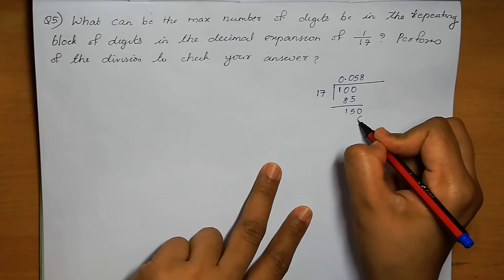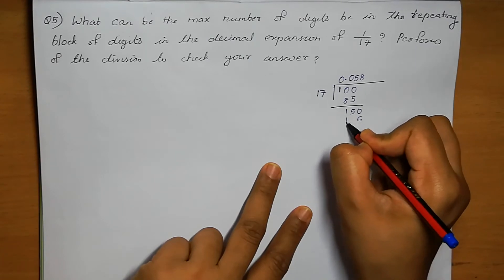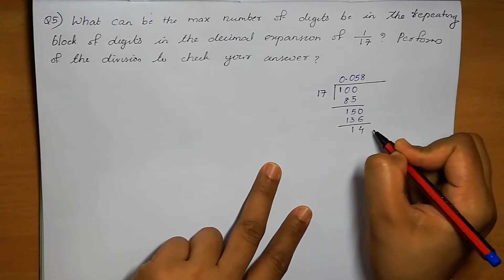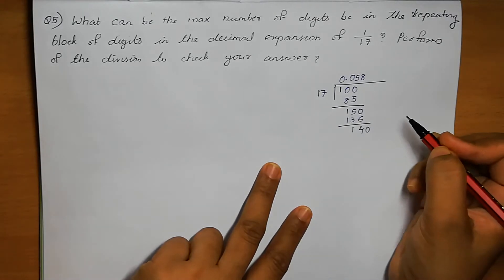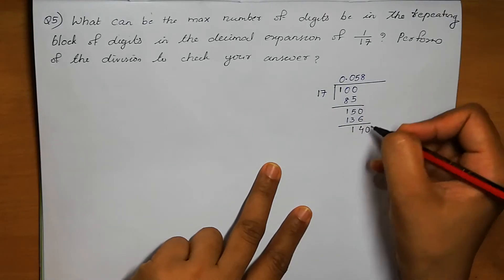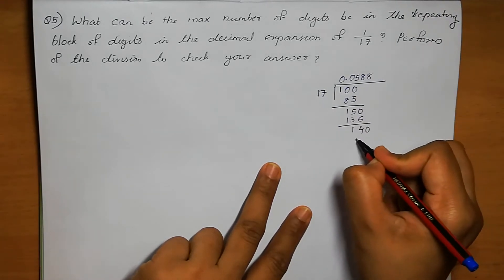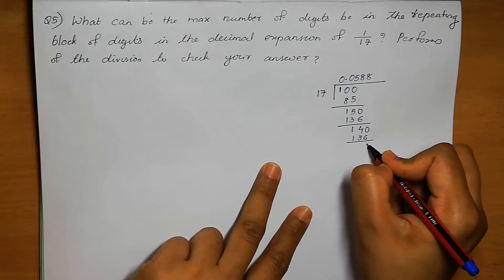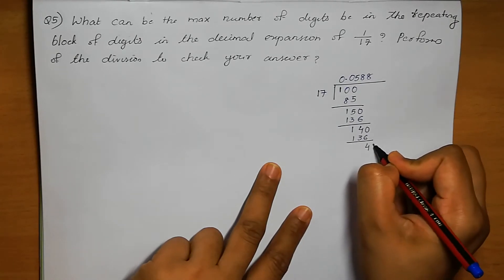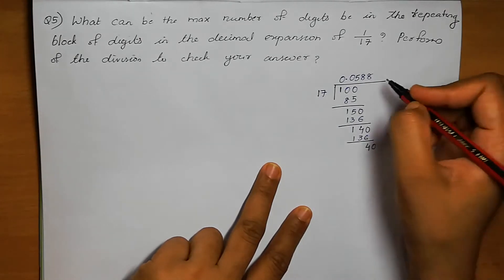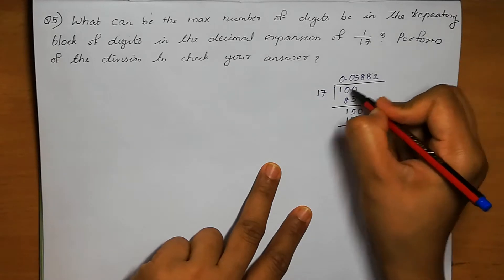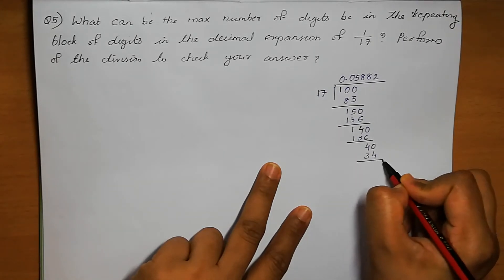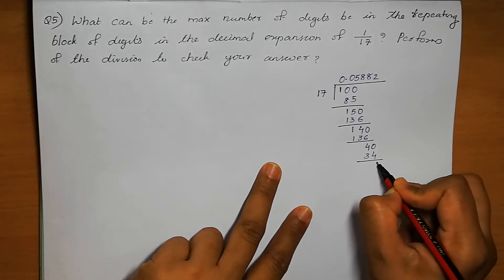56. 13. So 4, remainder 1. 140. In 140, again 8 only. 136. 4. 40. In 40, how many times? 7 times. 14, remainder 3. 34. 6.